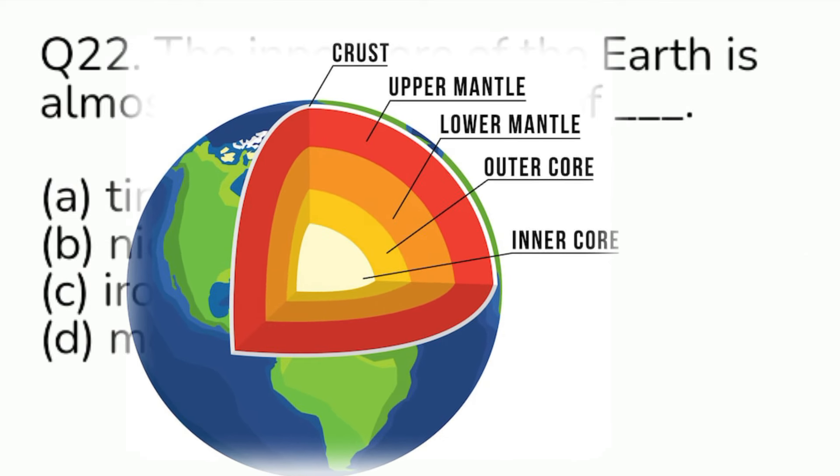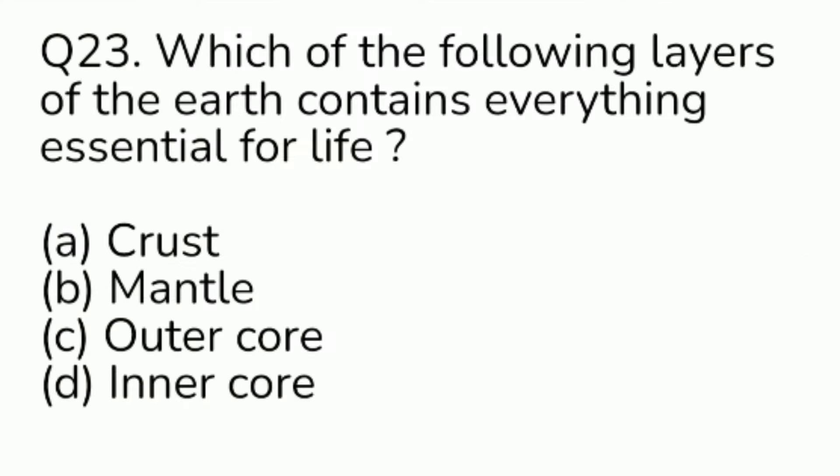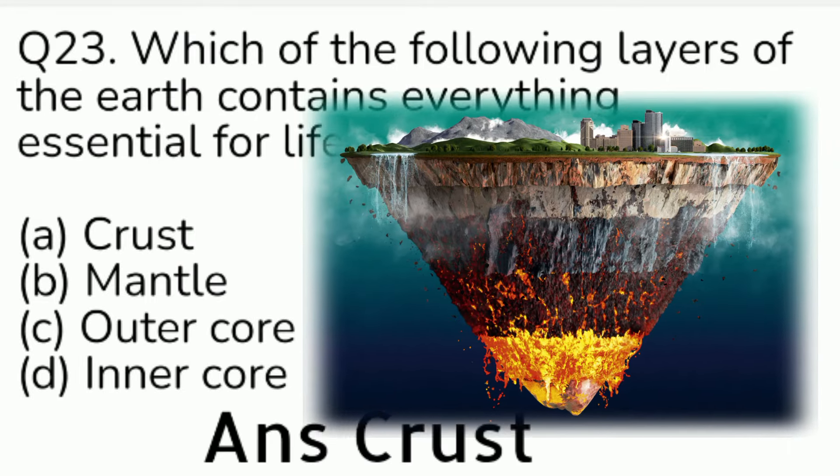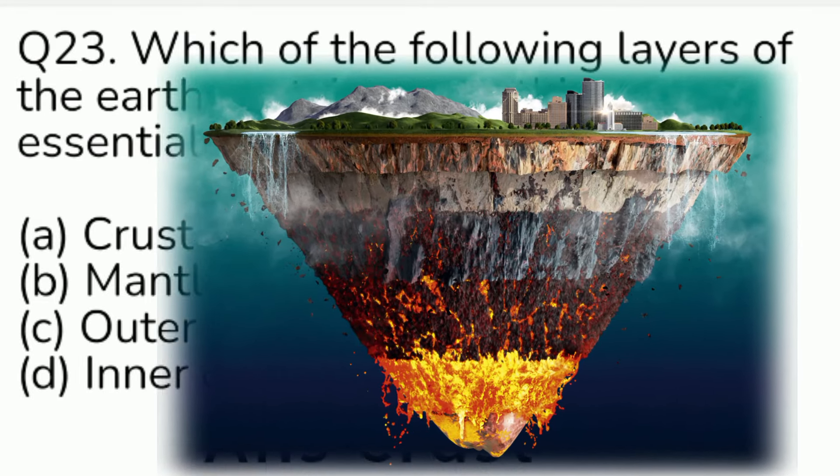Question number 23. Which of the following layers of the Earth contains everything essential for life? Option A: crust. Option B: mantle. Option C: outer core. Option D: inner core. Answer is Option A, crust.